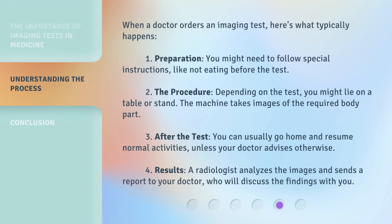When a doctor orders an imaging test, here's what typically happens. First, preparation: you might need to follow special instructions, like not eating before the test. Second, the procedure: depending on the test, you might lie on a table or stand, and the machine takes images of the required body part. Third, after the test, you can usually go home and resume normal activities, unless your doctor advises otherwise.